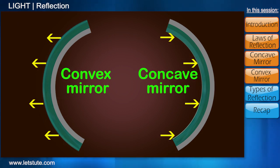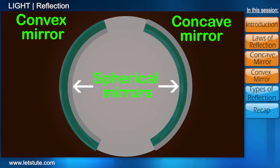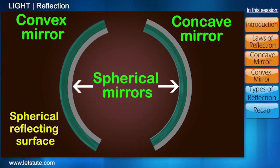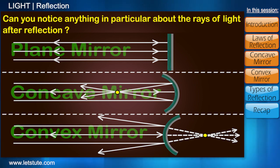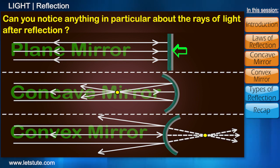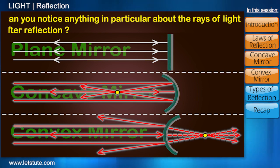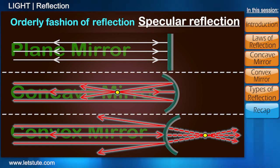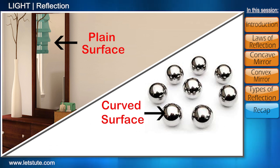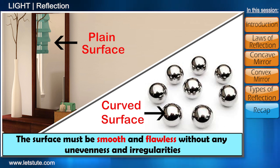These two types of mirrors come under the category of spherical mirrors. They are called spherical because they are curved and form a part of a spherical reflecting surface. Whether plain or spherical mirrors, can you notice anything in particular about the rays of light after reflection — like the discipline or order they follow? In the case of plain mirrors or metal plates, the light remains parallel even after reflection, and even if it's not parallel, it still follows an orderly fashion of reflection called specular reflection. For specular reflection to occur, the surface must be smooth and flawless without any unevenness or irregularities.